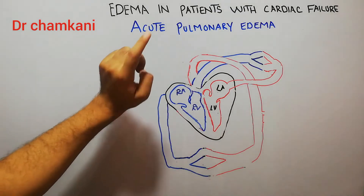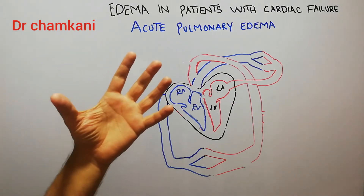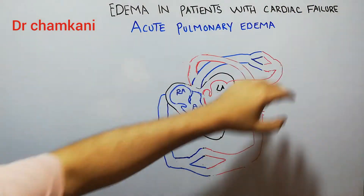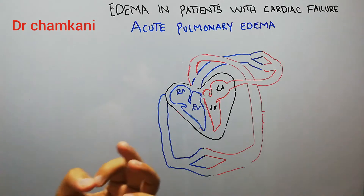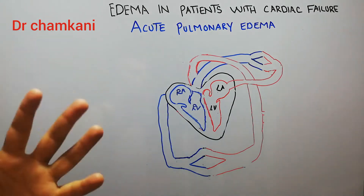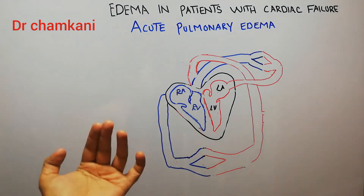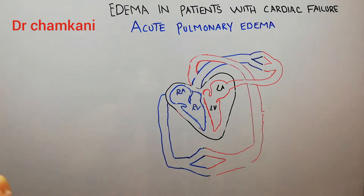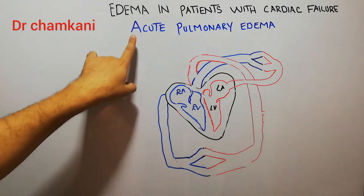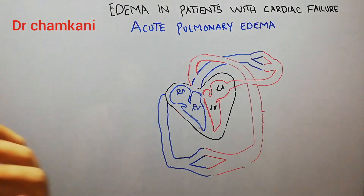Today we are going to discuss the pathophysiology of acute pulmonary edema, or how pulmonary edema occurs in heart failure patients. We have started the topic of edema in patients with cardiac failure. We have already discussed why peripheral edema does not occur in acute heart failure and why it occurs in persistent or chronic heart failure. Now today we are going to discuss edema in lungs, or pulmonary edema, and its pathophysiology.